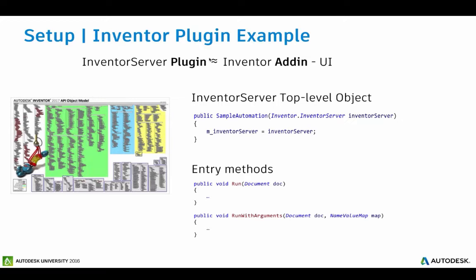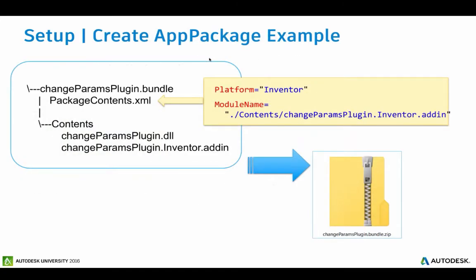You get handed an Inventor server object, and your entry point into your actual plugin is going to be through the 'run' or 'run with arguments' method. When you create your app package, there's a manifest file you'll need to create — package contents — which basically specifies where your add-in is and what the platform is. The contents are typically an Inventor plugin, or any other data that plugin may need. Those contents will get unzipped in a place the worker engine has access to.